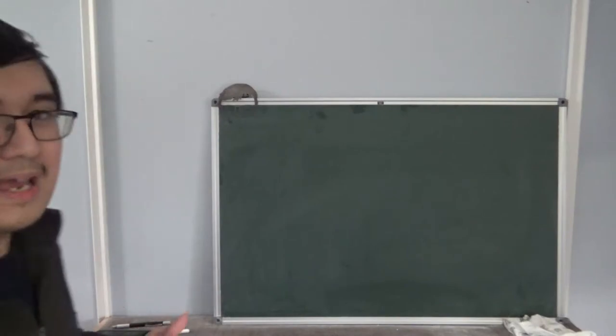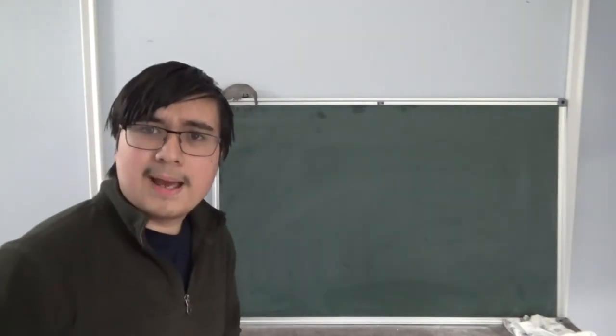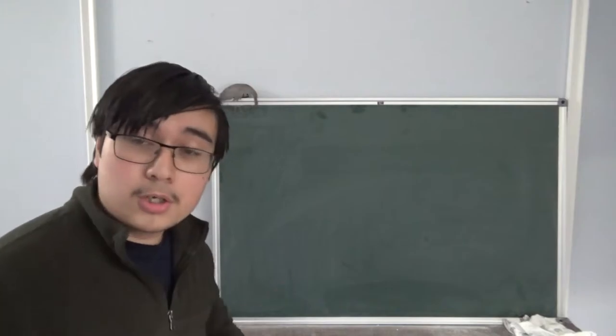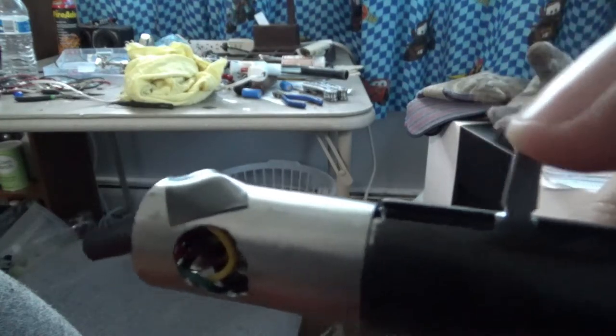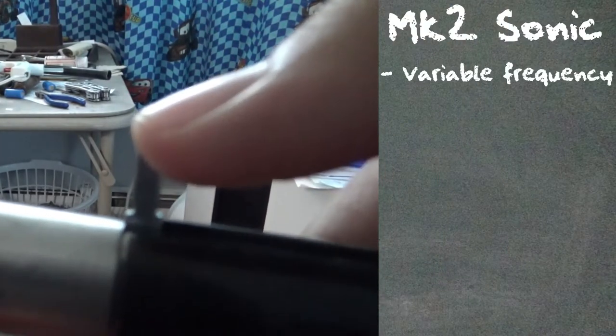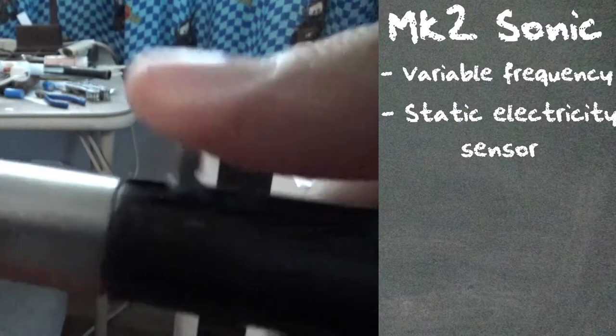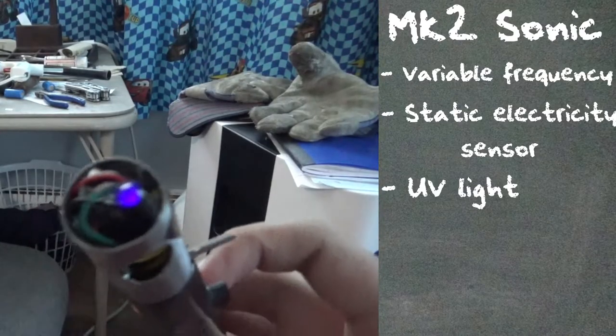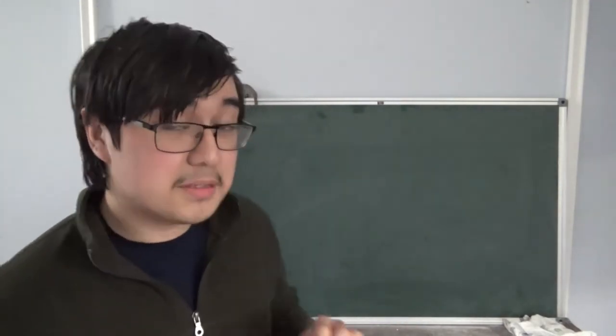The Sonic Screwdriver Project — what has led up to this? A few videos back, what I did was I made the Mark II Sonic Screwdriver. This Sonic Screwdriver was able to generate a variable frequency based upon the slider position. It was able to detect static electricity, which was very buggy. And it also had a UV LED. It had basic functions, but the idea was the user could use those basic functions to do a variety of tasks. Since then, I've done a lot of research and planning, and the Mark III is going to be the best one yet.